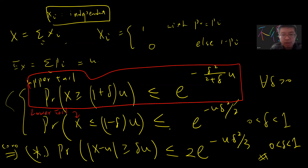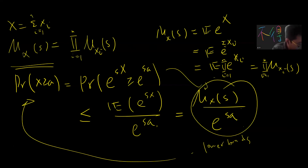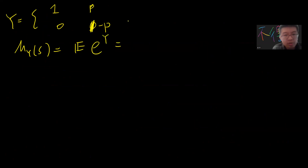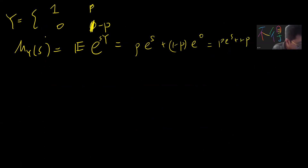Once we have this idea, we can prove the simple Bernoulli case. Consider Y to be Bernoulli(p): it's 1 with probability p and 0 with probability 1 − p. I want to compute the MGF, which is the expectation of exp(sY). So that's p · exp(s) + (1 − p) · 1, which equals p · e^s + (1 − p). We can rewrite this as 1 + p(e^s − 1).